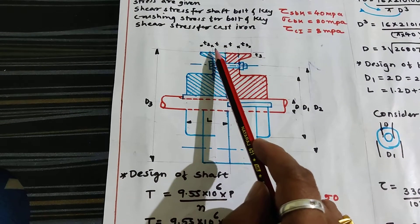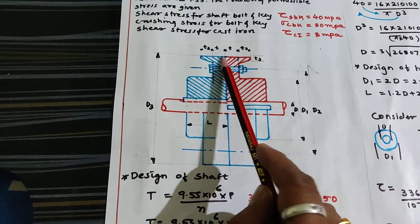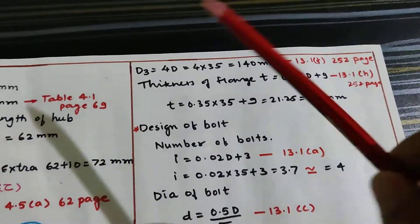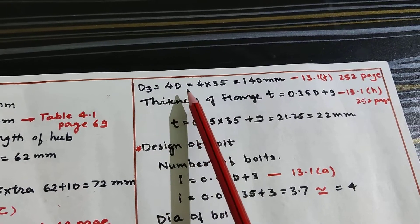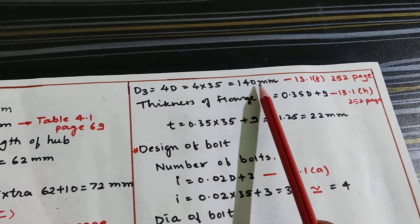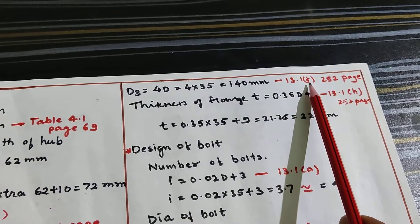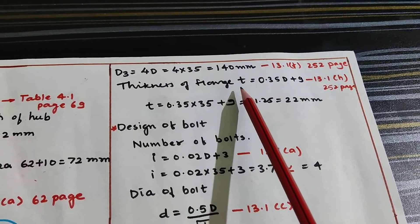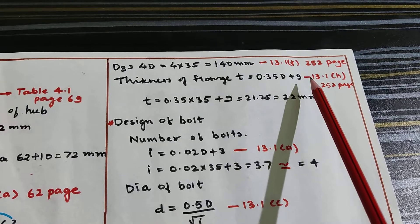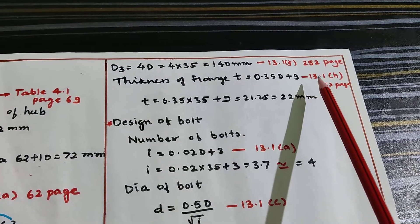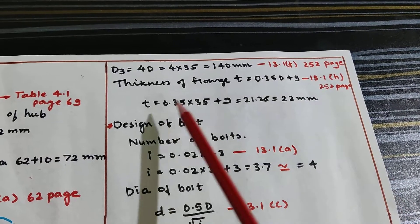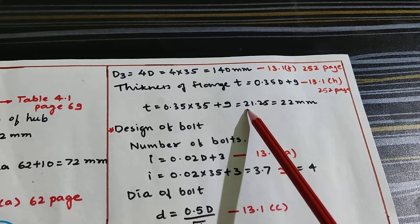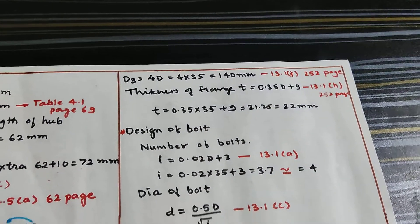Now find thickness of the flange and D3, which is the outer diameter. D3 formula is 4D = 4 × 35 = 140 mm, equation 13.1F page 252. Next, thickness of the flange T = 0.35D + 9 mm, equation 13.1H page 252. Substituting D = 35, final answer is 21.25 which I will round off to 22 mm.